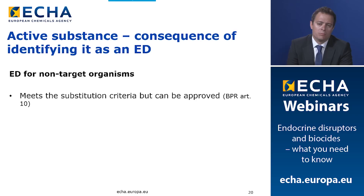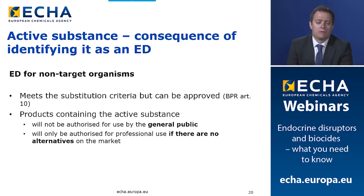If a substance meets the ED criteria for non-target organisms, conditions apply: the product will not be authorized for use by the general public, and will only be authorized for professional use if there are no alternatives on the market — meaning an analysis of alternatives is always required when a product is authorized. Also important: the same consequences apply if the intended biocidal mode of action controls targeted organisms via the endocrine system, meaning such actives will automatically meet the substitution criteria without further assessment.